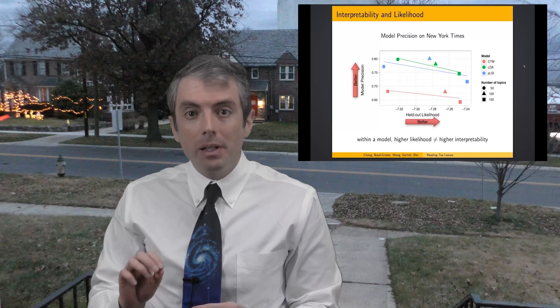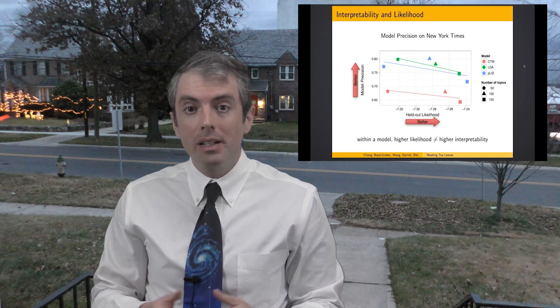What I'm talking about is the Reading Tea Leaves paper. Oh, that paper. What this paper argued is that perplexity wasn't a good metric for topic models. We don't use topic models to do text prediction, after all. We want these topics to make sense to a human user. So we use a metric called coherence.